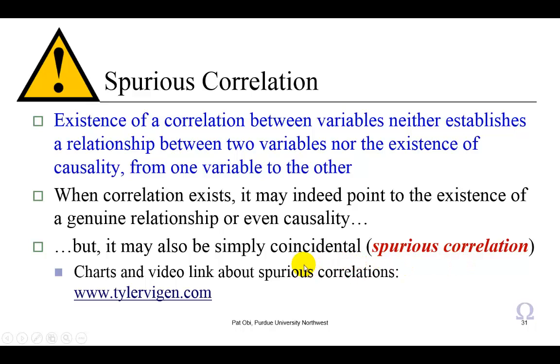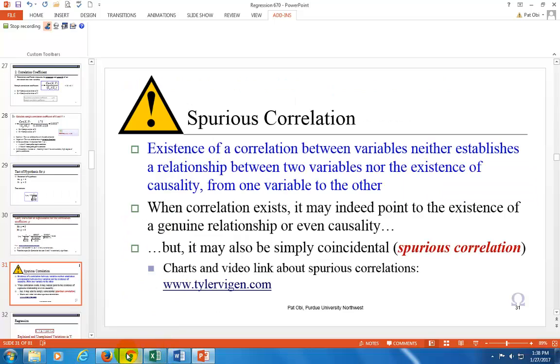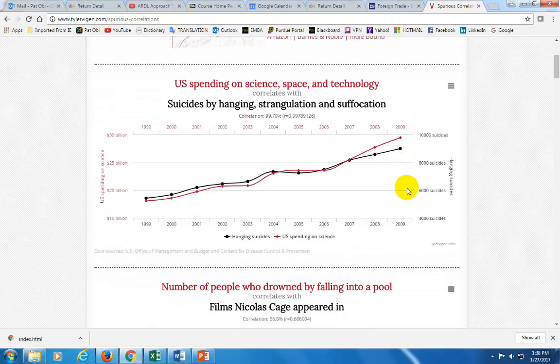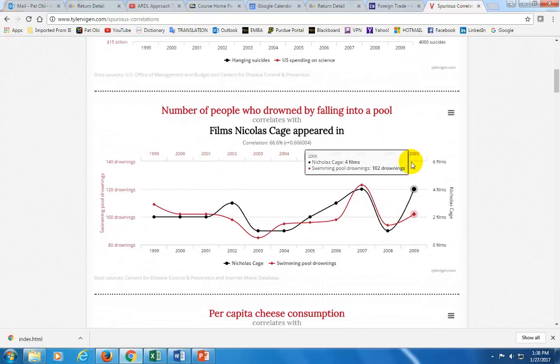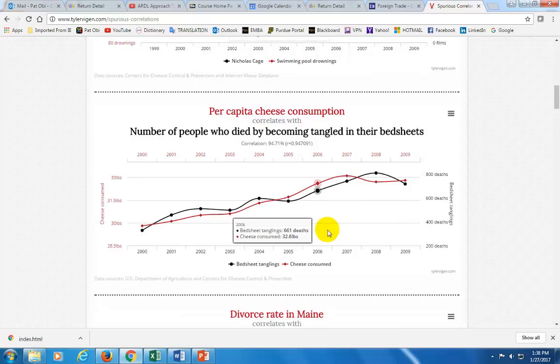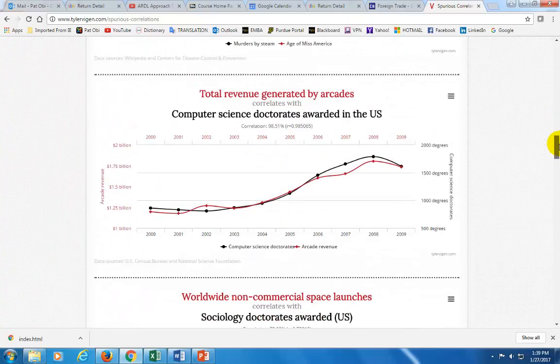What I've done to get you laughing a little bit about the import of this is to go to this website that this individual has put together, and it shows you various examples of spurious correlation. Look at this first one. U.S. spending on science, space, and technology correlates with suicides by hanging, strangulation, and suffocation. A correlation coefficient of almost 1. Look at the lines. They pretty much move in tandem, almost. Look at the next one. Number of people who drowned by falling into a pool correlates with films Nicolas Cage appeared in. A correlation coefficient of 0.67. Look at this one here. Per capita cheese consumption correlates with the number of people who died by becoming tangled in their bedsheets. That's a correlation coefficient of 0.95. There's a whole lot of other ones here that will bring a smile to your face.